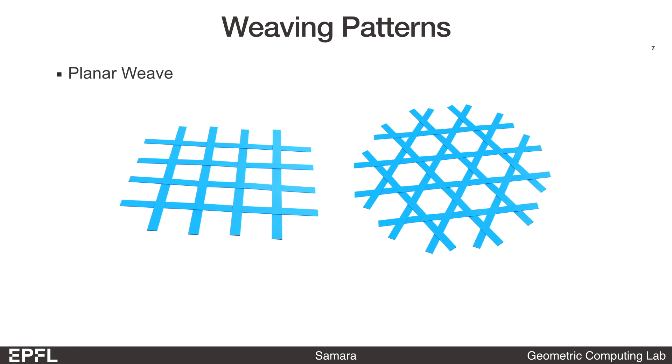The typical ribbons used in basket weaving are often much wider than their thickness, so that it's easy to bend the ribbon along their weak axis, but almost impossible along the stiff axis.